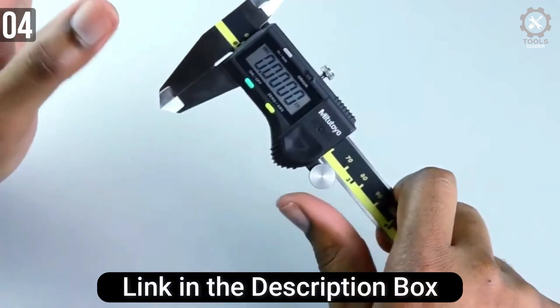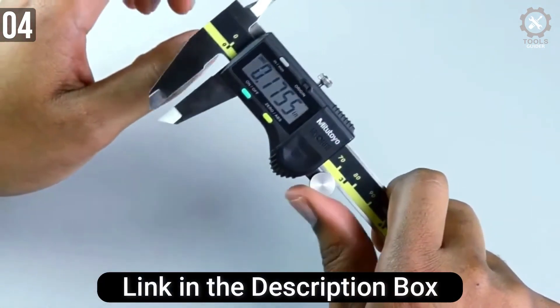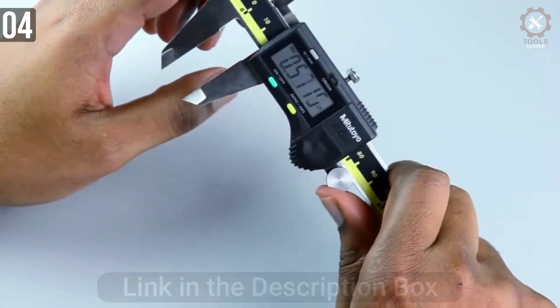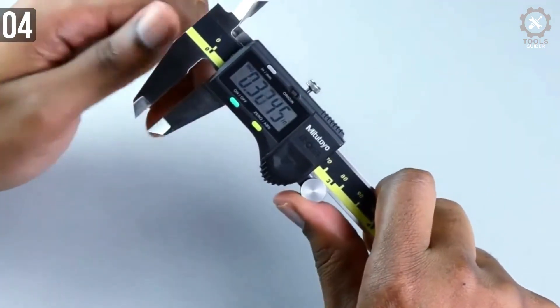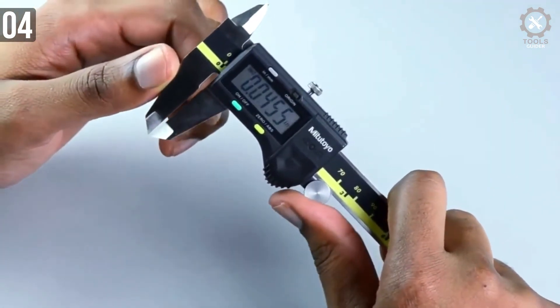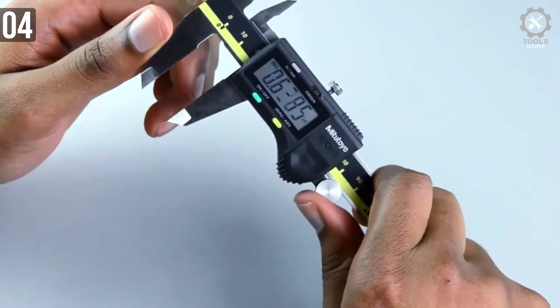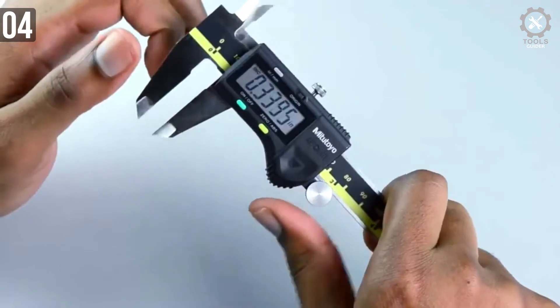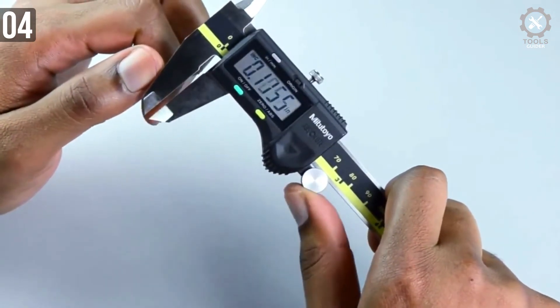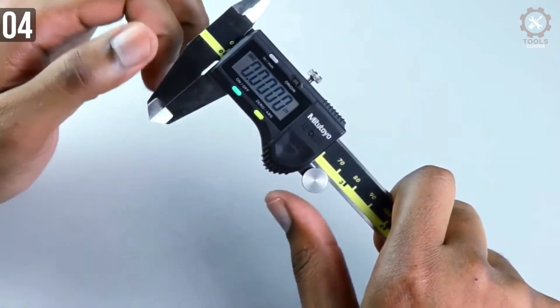You don't need to repeat zero setting anymore. The zero-slash-ABS key allows the display to be zero set at any slider position along the scale for incremental comparison measurement. This switch will also allow 500AOS return to the absolute coordinate and display the true position from origin point.